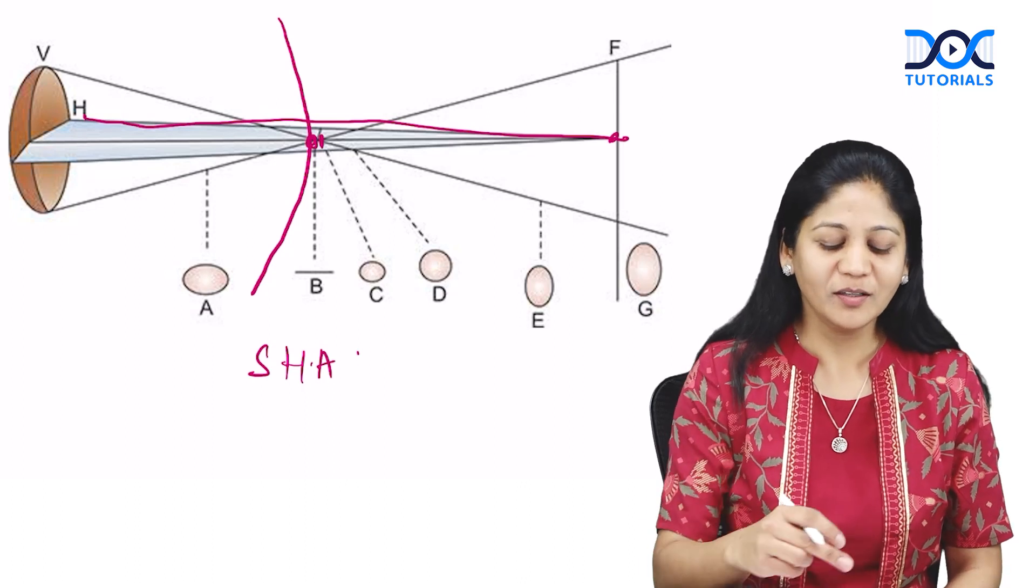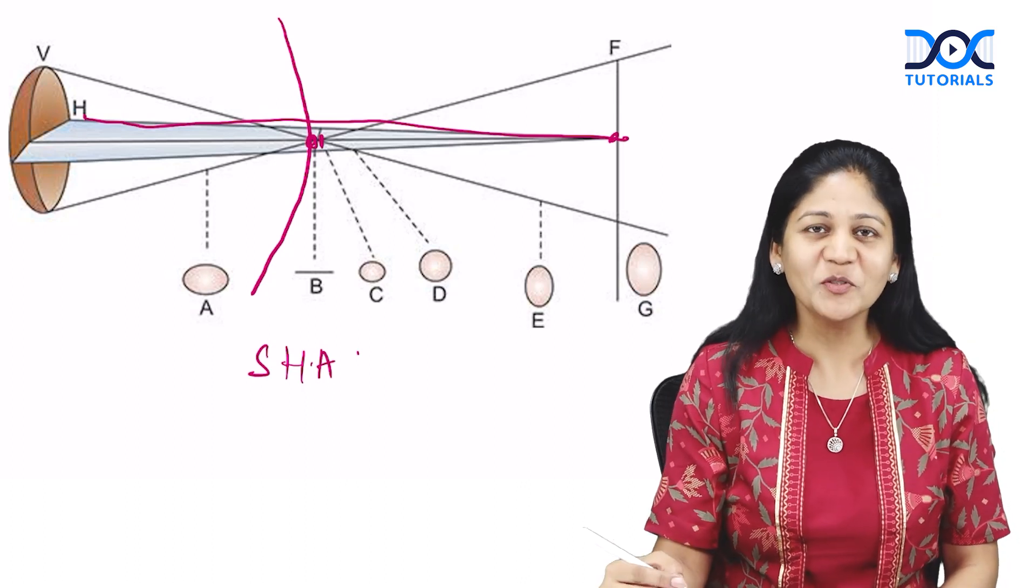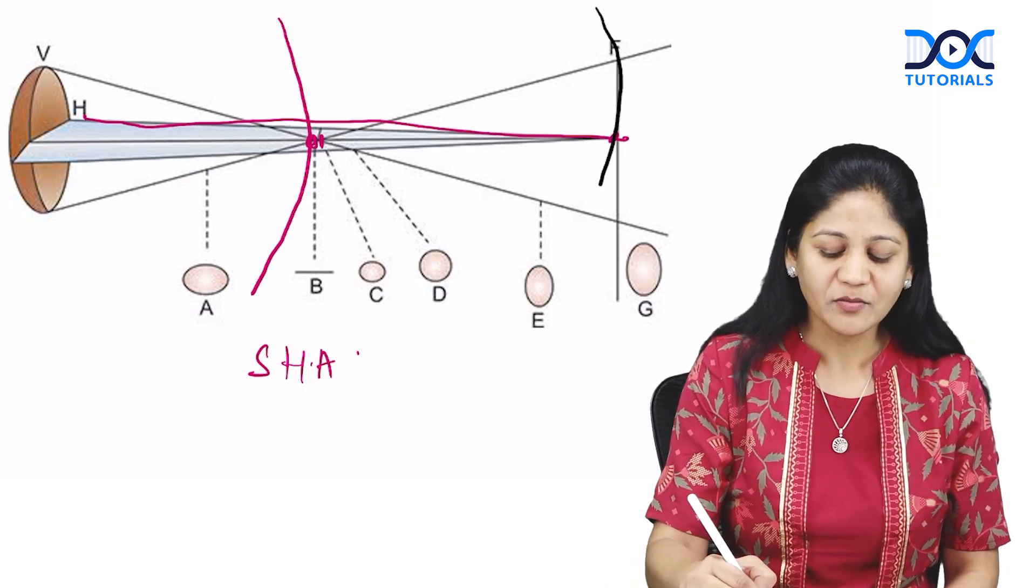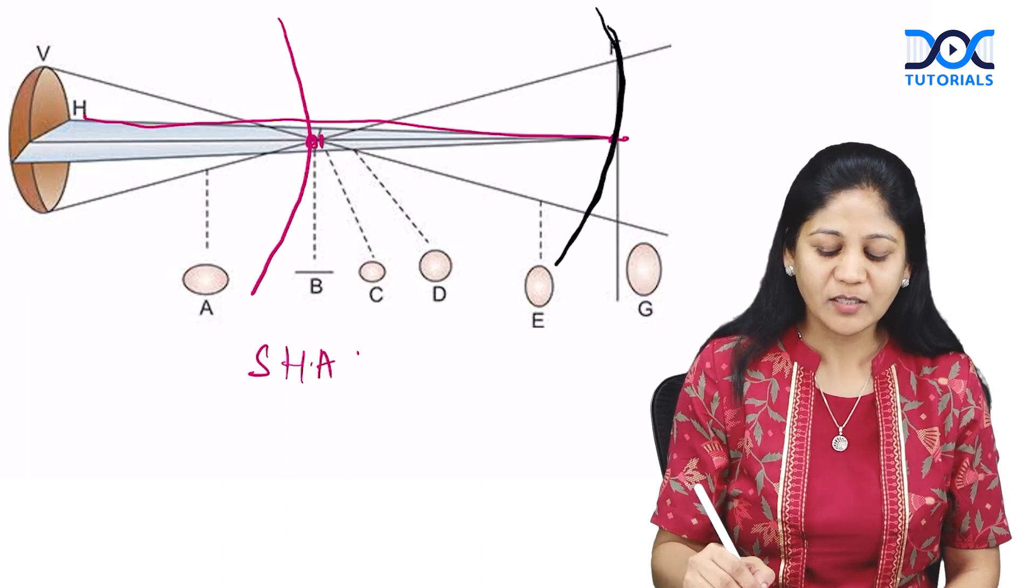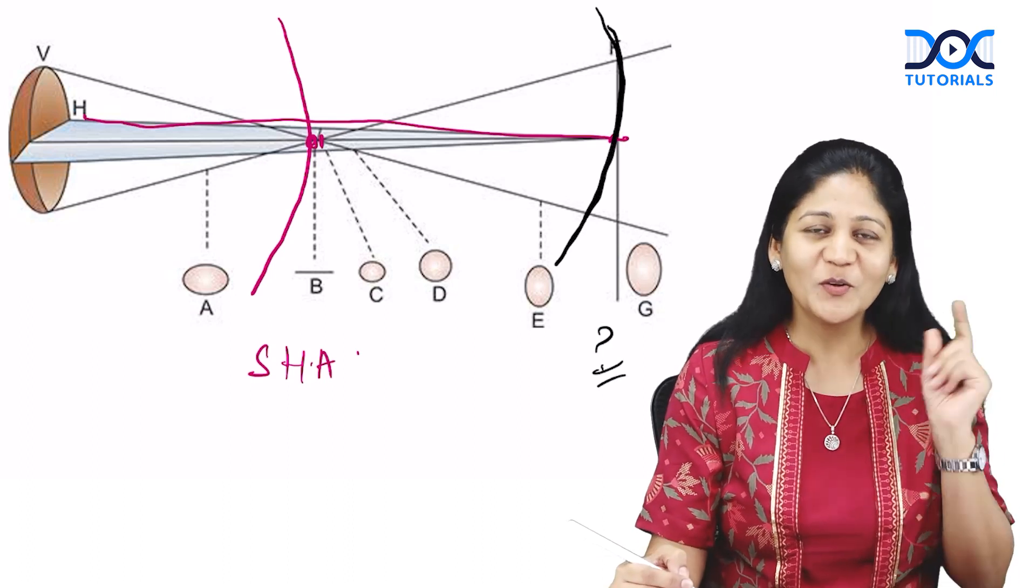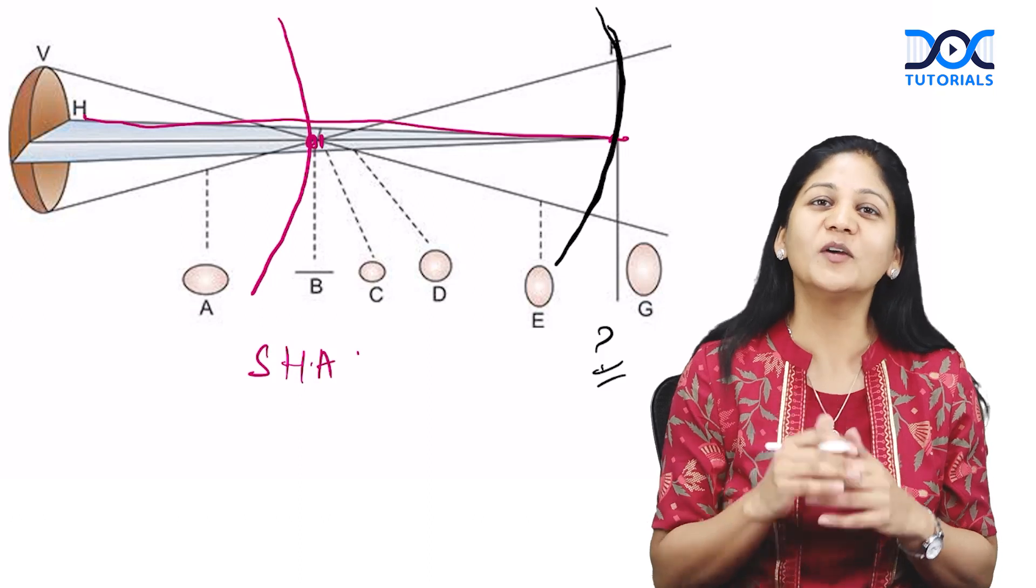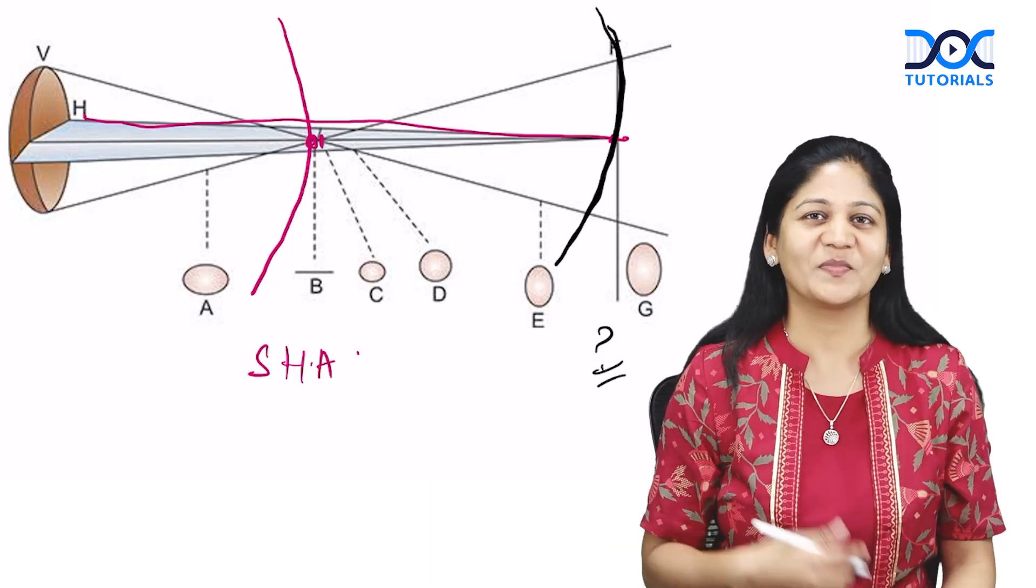Your homework question is: which refractive error is this when your retina is at point G? Tell me in the comment section what the refractive error is. Thank you.